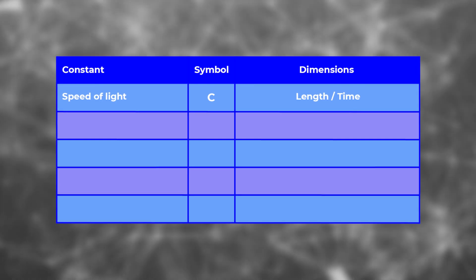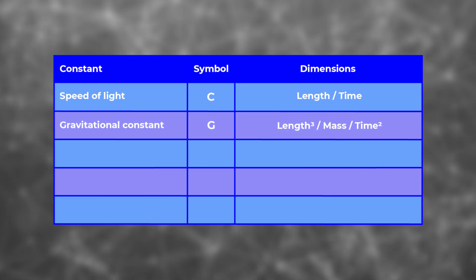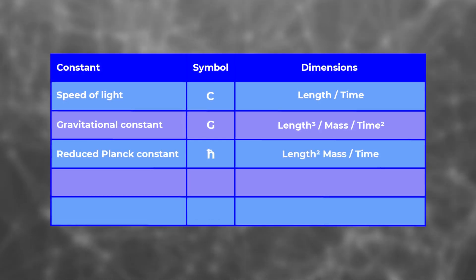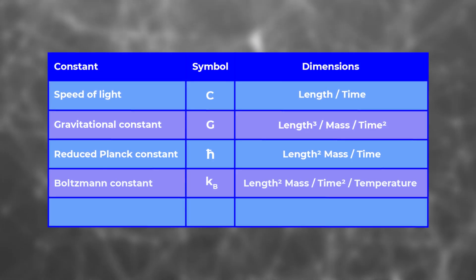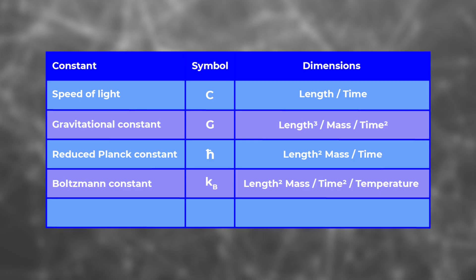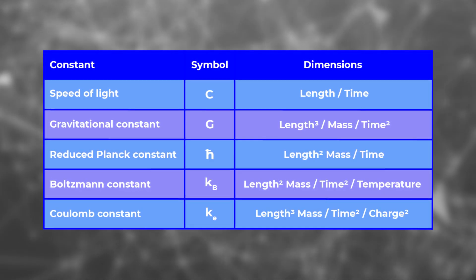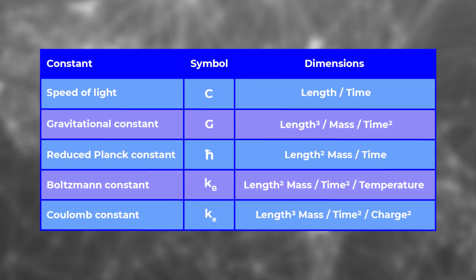Planck reasoned that any scientifically sophisticated society could measure a few quantities in whatever units they used. They are: the speed of light, which has units of length per time; the gravitational constant, which has units of length cubed per mass per time squared; the reduced Planck constant, which has units of length squared times mass per time; the Boltzmann constant, which has units of length squared times mass per time squared per temperature; and the Coulomb constant of electricity, which has units of length cubed times mass per time squared per charge squared.